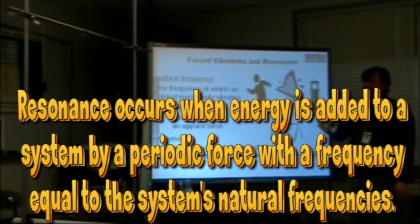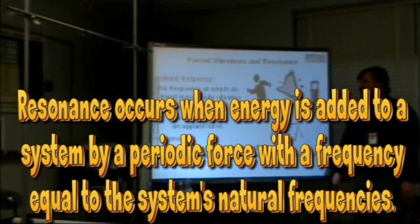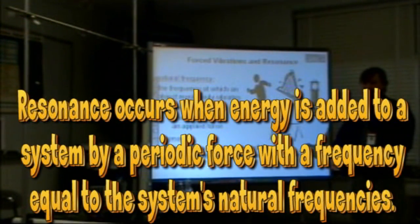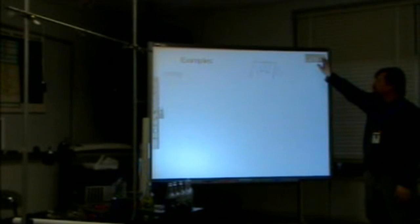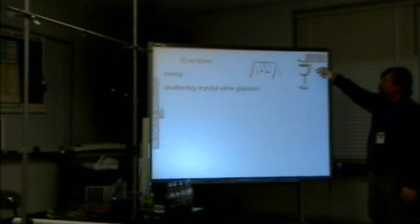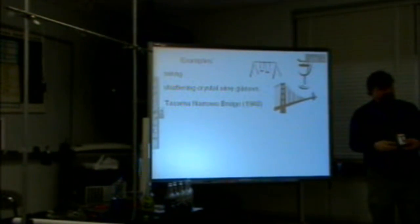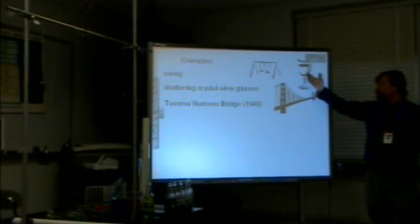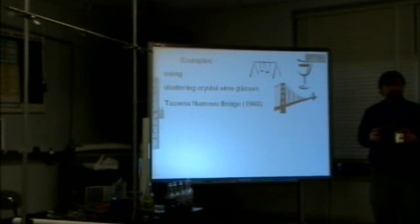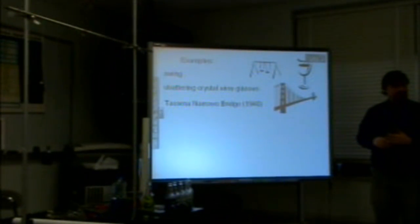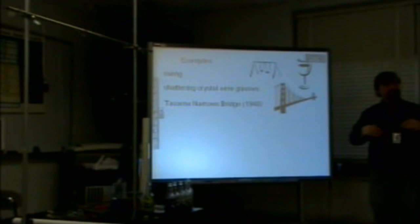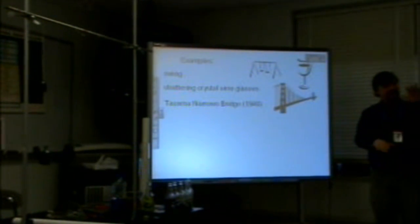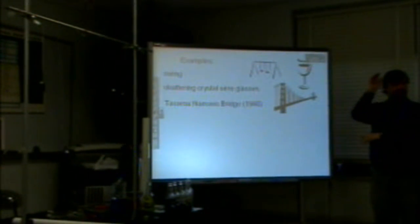We have a natural frequency described by our pendulum — by the length of the string, giving us a specific time period, which is the inverse of the frequency. Examples: swings or pendulums. If you have a natural frequency in a crystalline glass and compressions equal to those, you get constructive interference — the amplitude vibrates larger and you can shatter the glass. The Tacoma Narrows bridge: it had a natural swing like a pendulum, and the wind was creating highs and lows, causing it to resonate. The amplitude got bigger and bigger until it crumbled and collapsed.